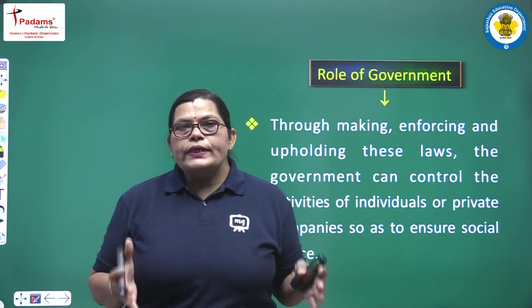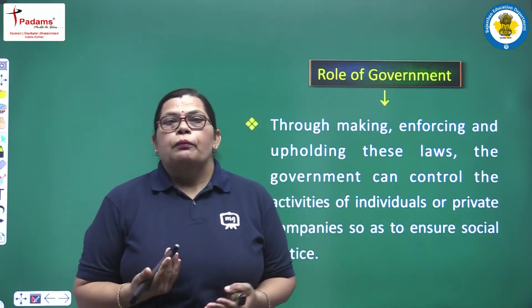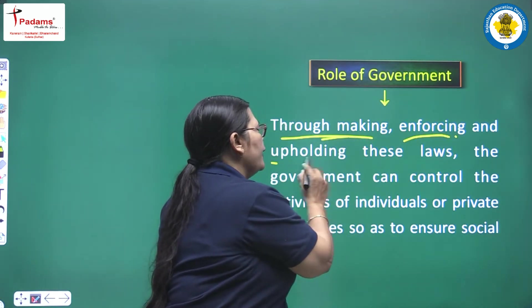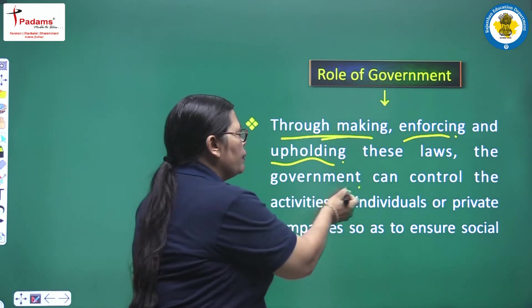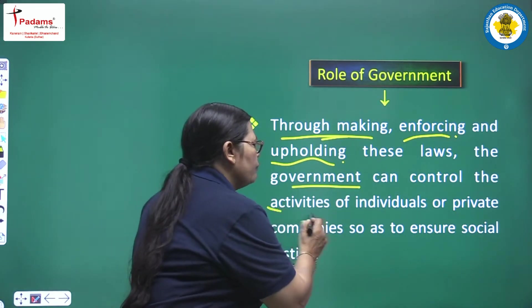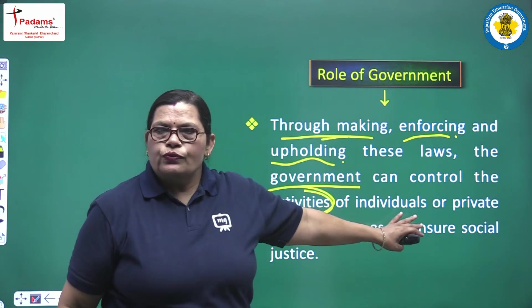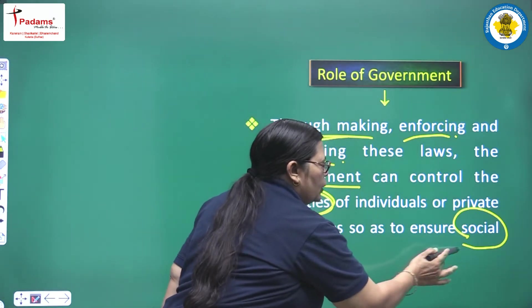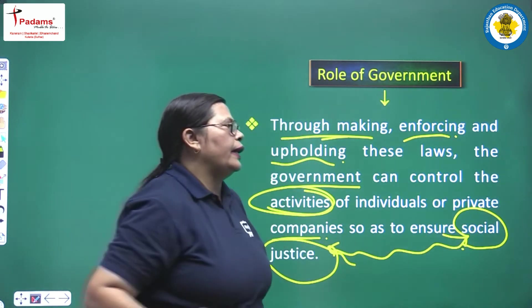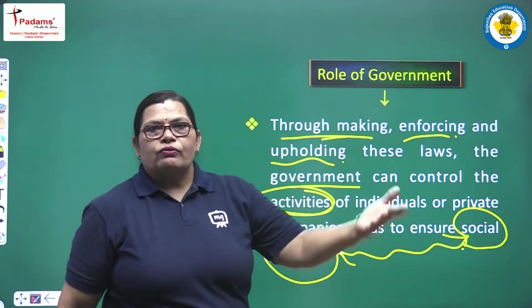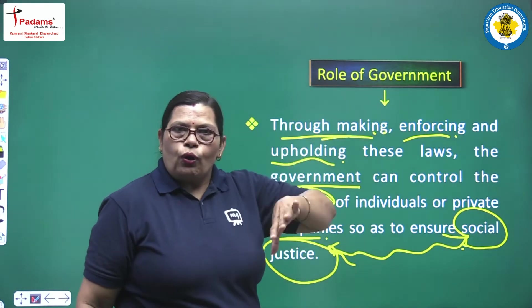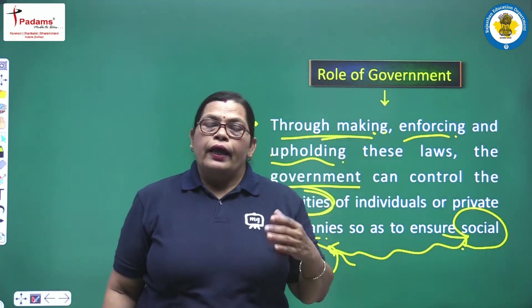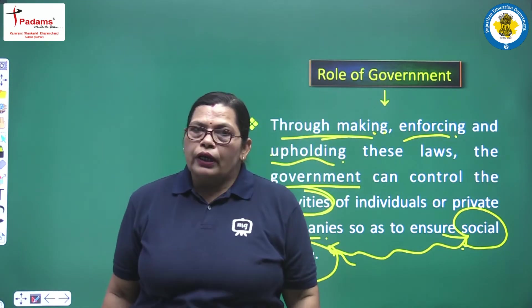So what's the role of government in all these — making laws and enforcement? Through making, enforcing, and upholding these laws, the government can control the activities of individuals or private companies so as to ensure social justice. The concept of social justice is clear: making of laws, enforcement of laws, and upholding these laws are all important things, and all this is the role of government.